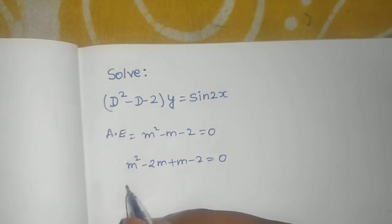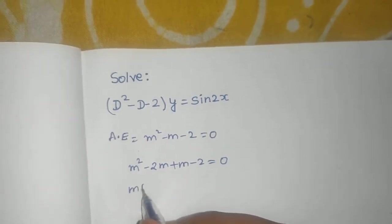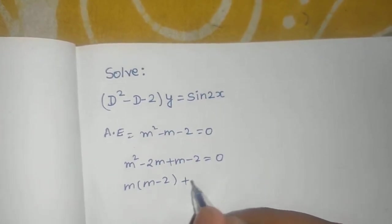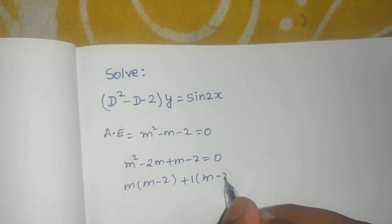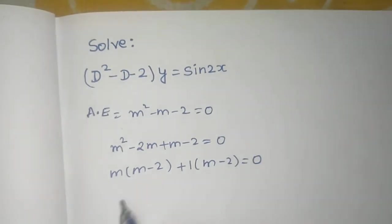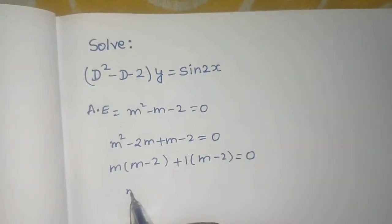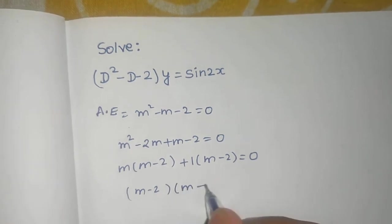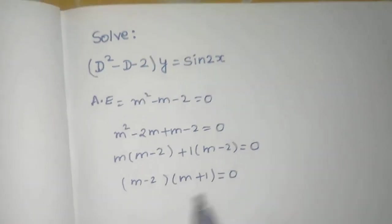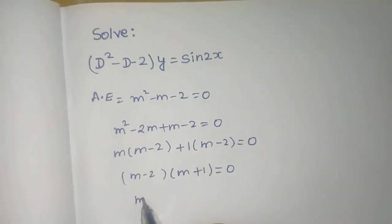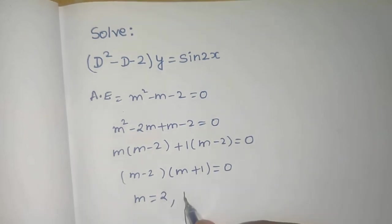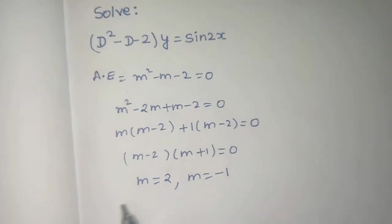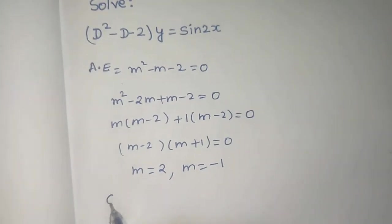Let's solve this. We can write m² - m - 2 = 0 as m² - 2m + m - 2 = 0, which factors as m(m - 2) + 1(m - 2) = 0, giving (m - 2)(m + 1) = 0.